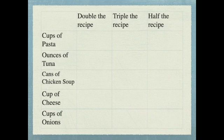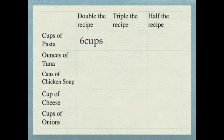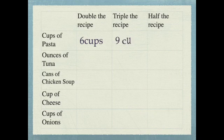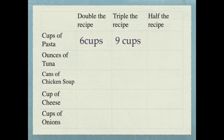So the recipe calls for three cups of pasta, but now I'm going to double that. So three times two is six. And now I'm just going to move to the next column and triple that part. So if I needed three cups of pasta and I triple that, three times three is nine. And if I want half of the original amount, then I need to take three and divide it by two. So three divided by two is one and a half cups.